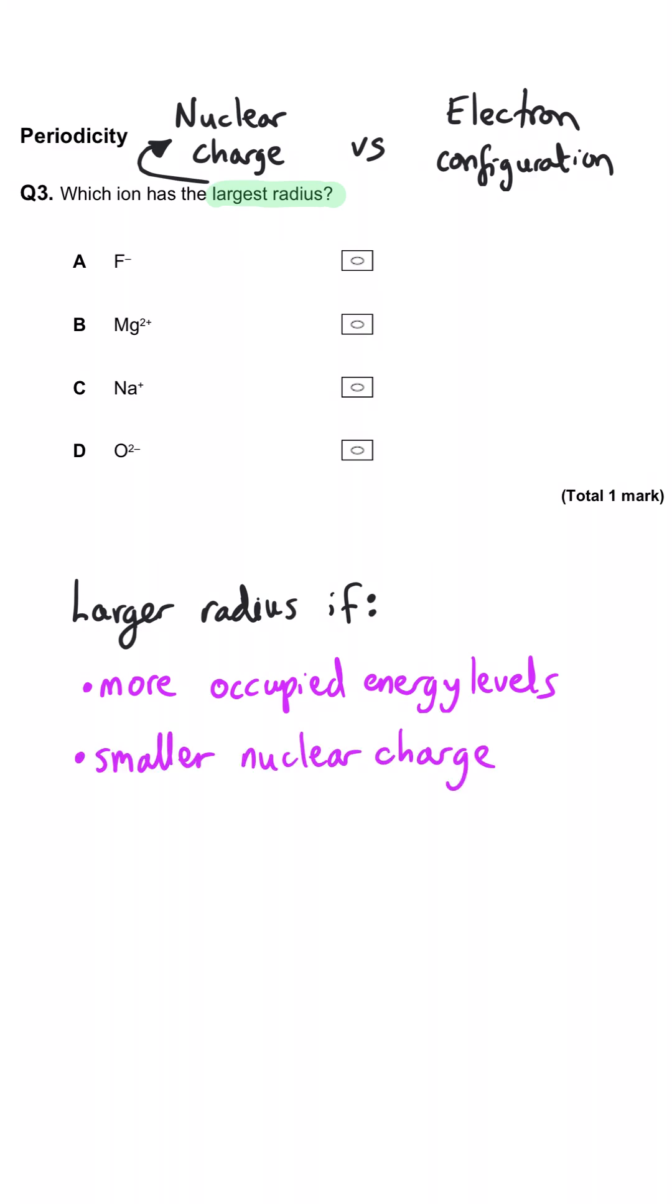And so if we look at each of these, the atomic numbers of fluorine, magnesium, sodium, and oxygen are 9, 12, 11, and 8. And so that's the number of protons and electrons the elements will have.